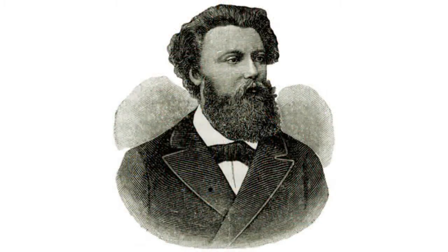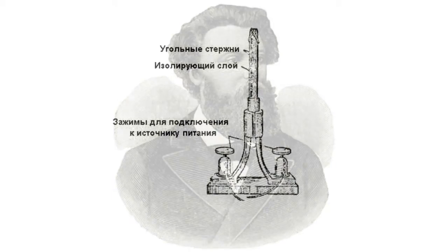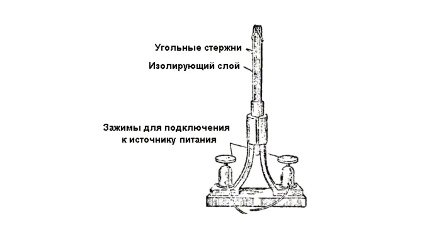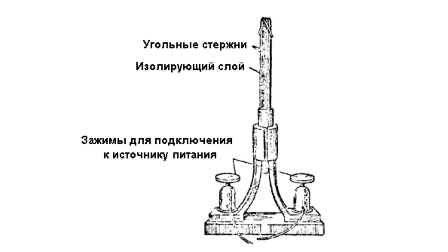The invention of an original design of the arc lamp by Pavel Nikolaevich Yablachkov marked the widespread use of electricity for lighting. The Yablachkov candle represented two coal terminals separated by a thin plate of a poorly conductive material, for example kaolin or gypsum.